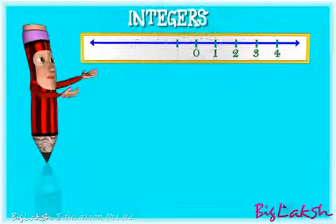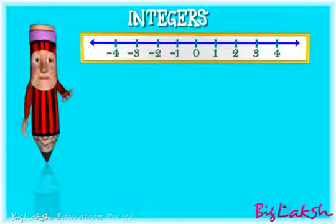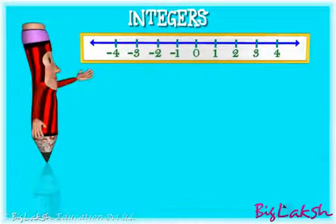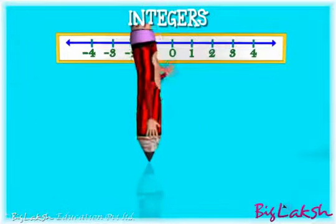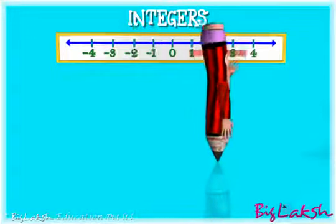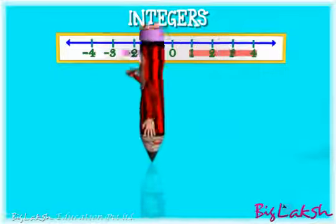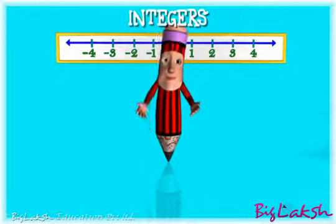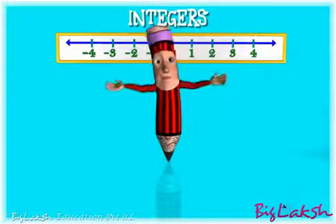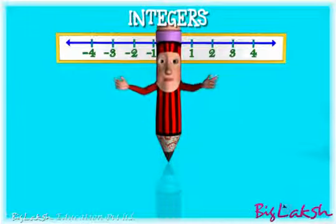Now let us move on to integers. You can see that negative numbers have appeared on the number line. Integers include all natural numbers, their negatives and zero. You can notice that integers extend indefinitely on both sides of the zero.